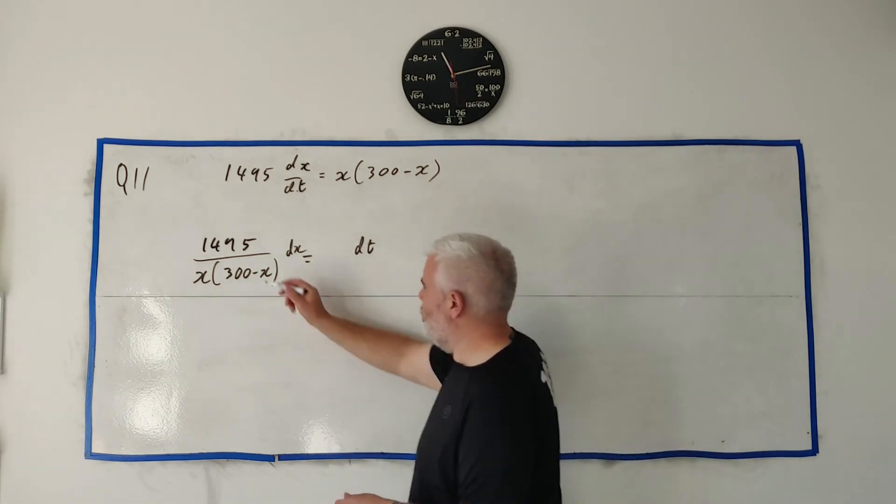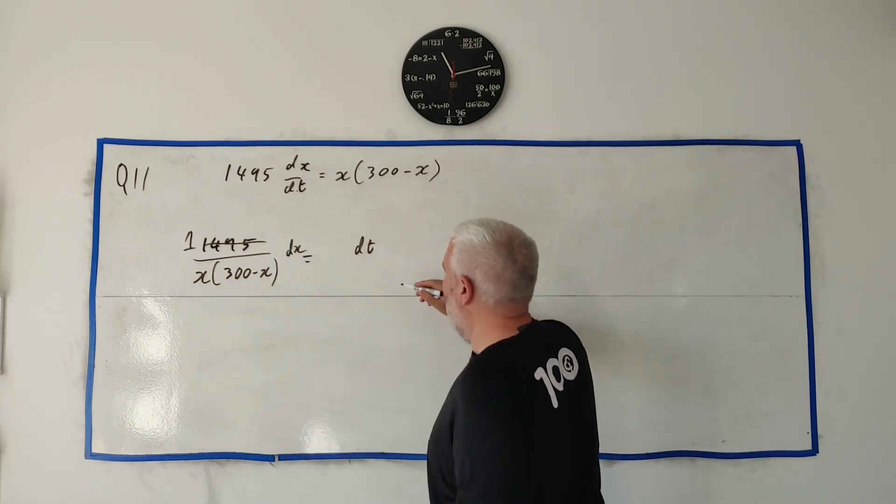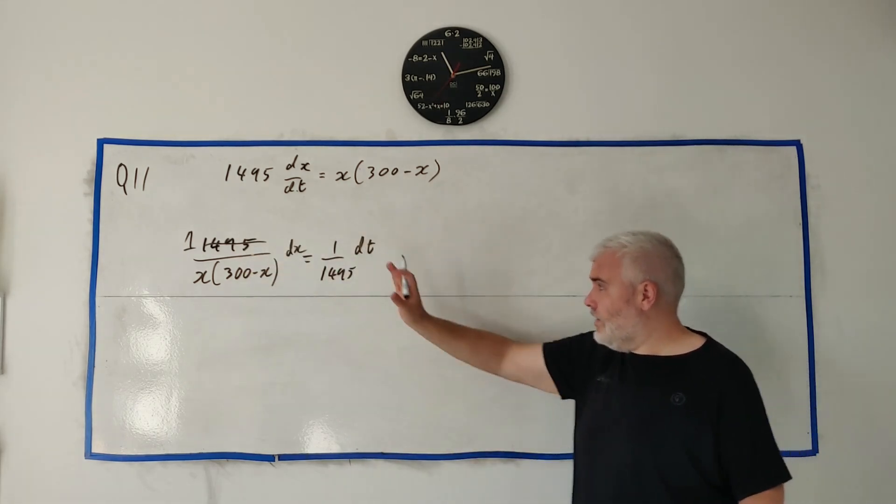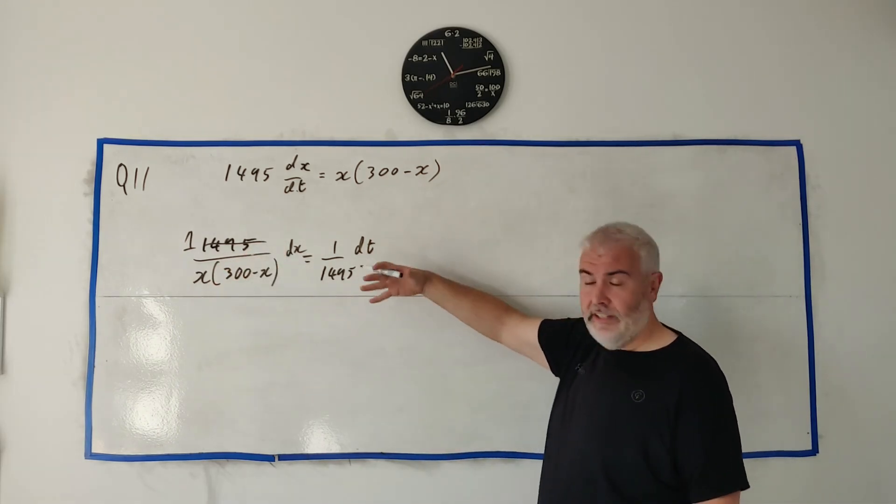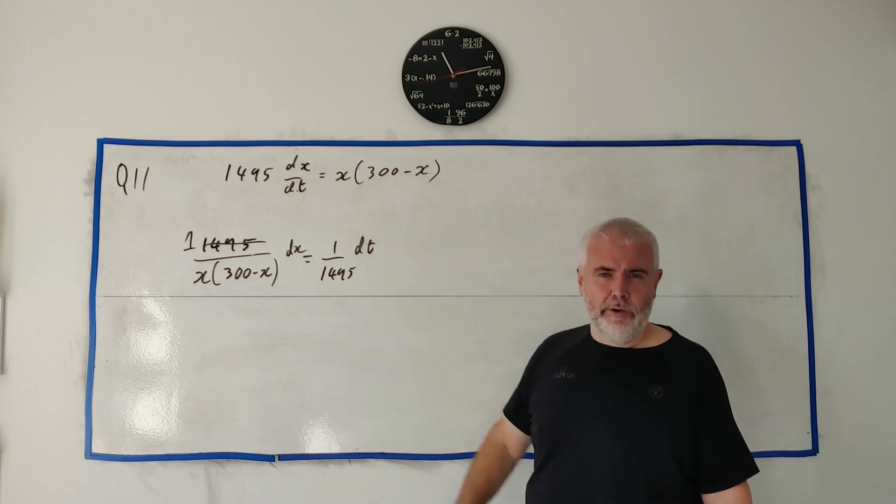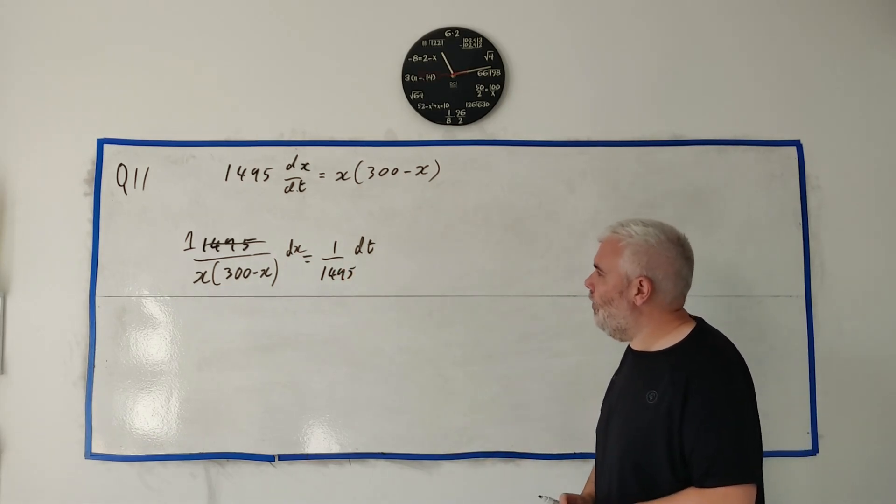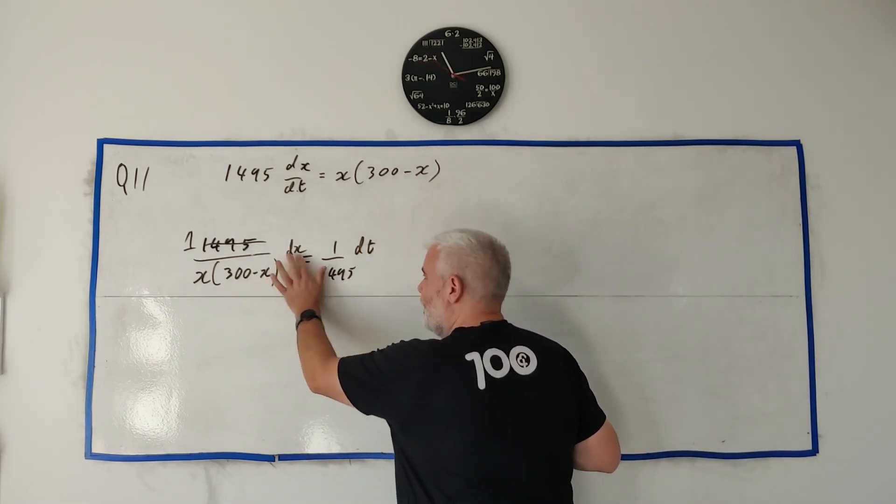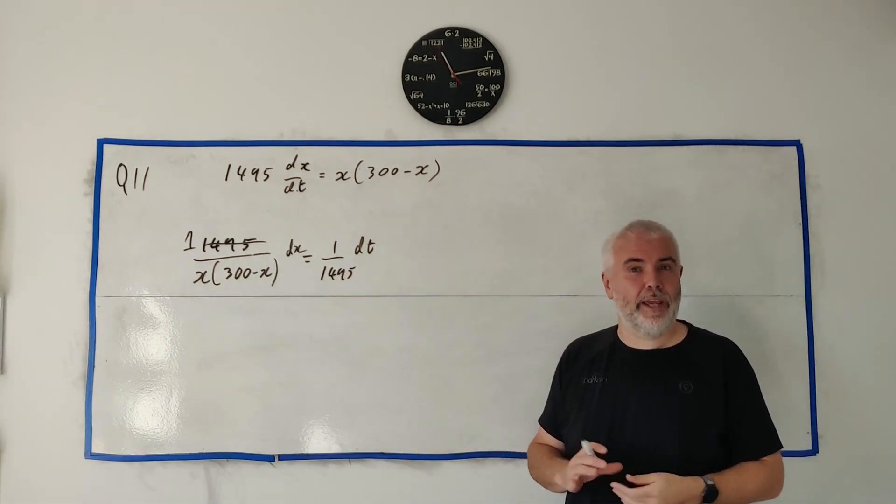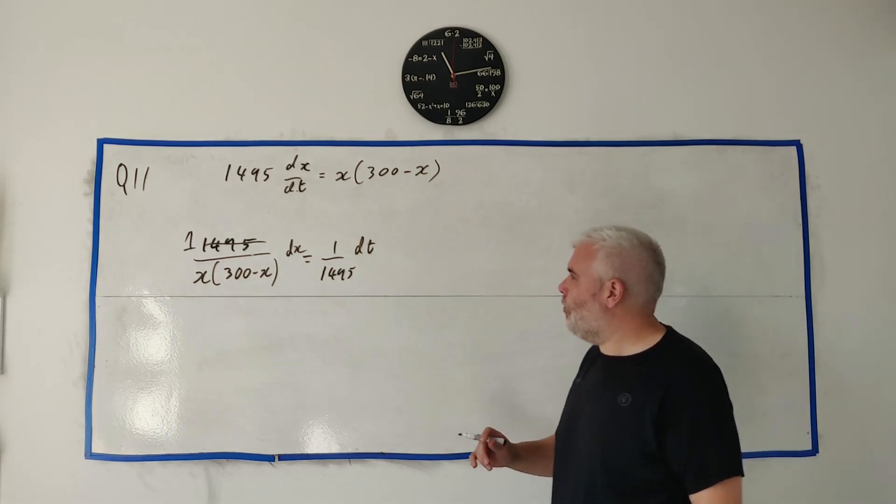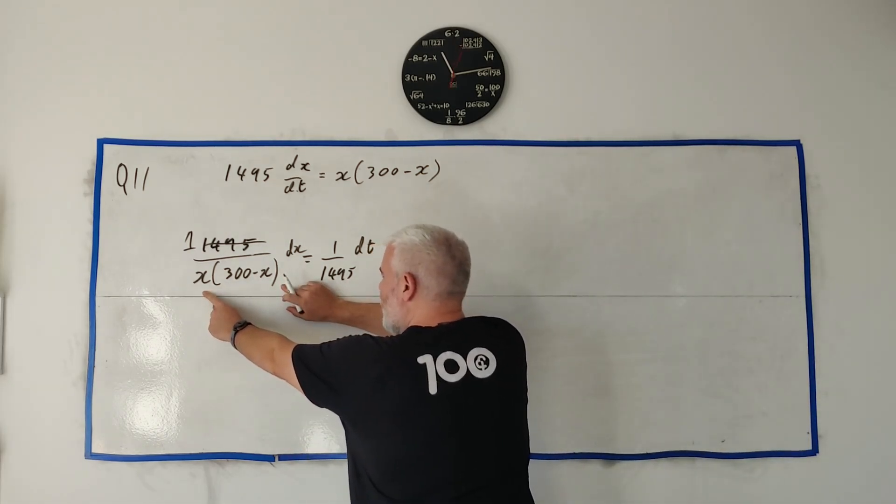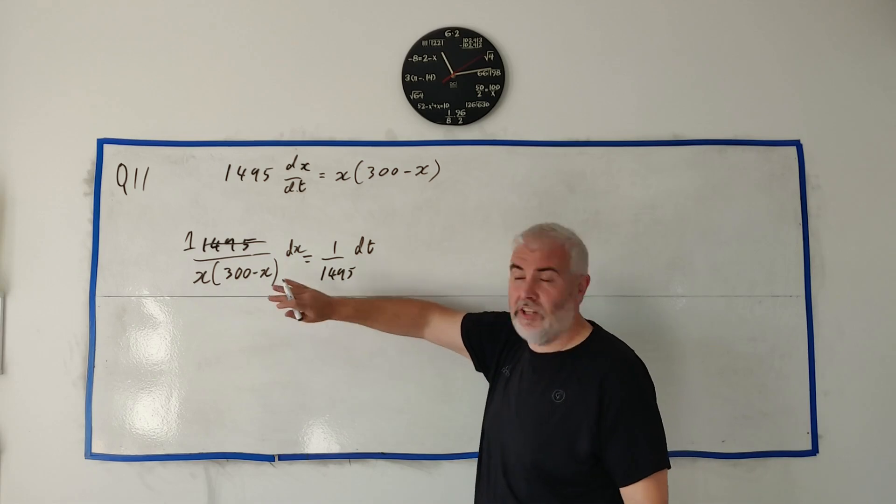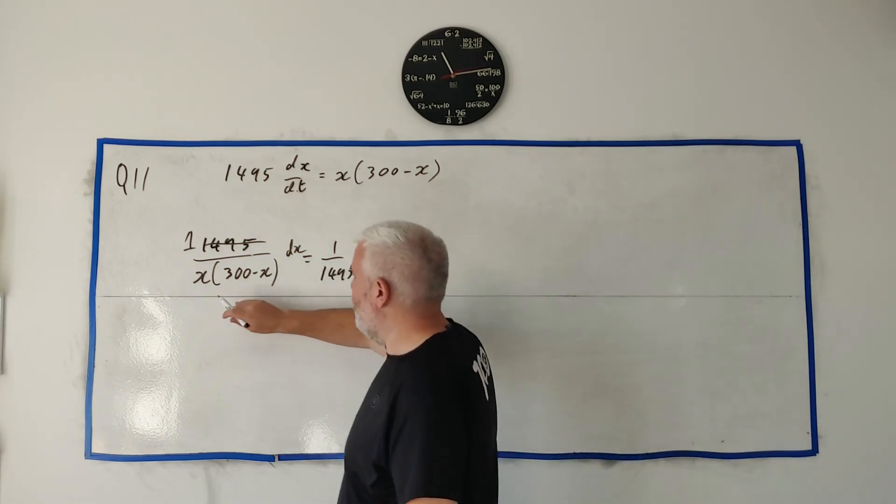So, if we do that, and we want all the x's on the same side. So, we'll leave dx on the top on the left and we'll move all the x's over with it. And we'll put dt on the right with all the t's. Now, there's no t's in this case, so it's a little easier. So, we're left with something now we can solve. We can just integrate both sides. The problem is integrating this is a bit difficult. How do we do it? And that's where their clue comes in.